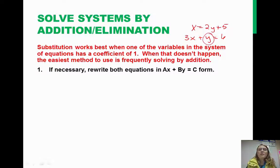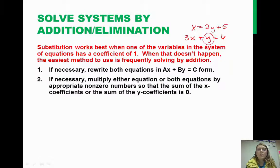First of all, it is necessary to write both equations in standard form. Then, if necessary, we need to multiply one or the other equation by something so that we can eliminate x or y. We can multiply either equation or both equations by an appropriate non-zero number so that the sum of the x coefficients or the sum of the y coefficients is 0. This way, we can solve for either just the x's or just the y's. The x or the y will be eliminated.